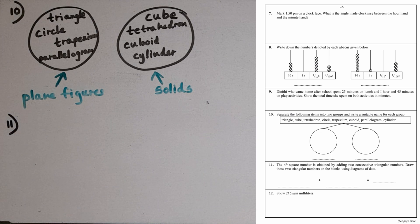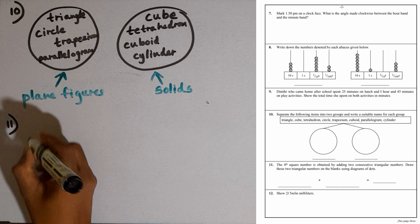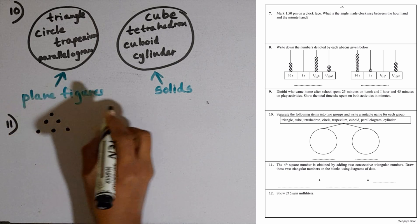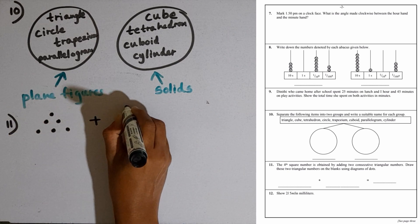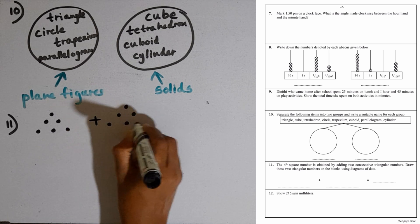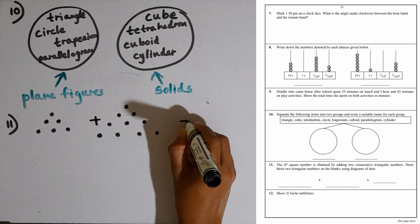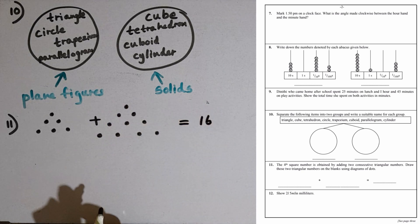Question number 11: The fourth square number is obtained by adding two consecutive triangular numbers. Draw those two triangular numbers using diagrams of dots. The fourth square number is 16. If we take the two triangular numbers, the third triangular number is 6 and the fourth triangular number is 10. These are the two triangular numbers, this equals 16.